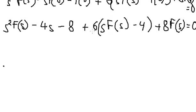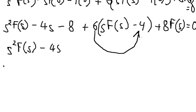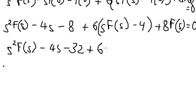So we need to expand and simplify. We have number six multiplied with negative number four, which gives about negative 24. Negative 24 with negative eight gives about negative 32. And we go about 6·s·F(s) plus 8·F(s).